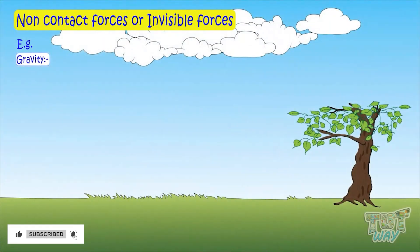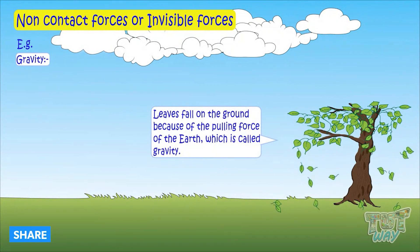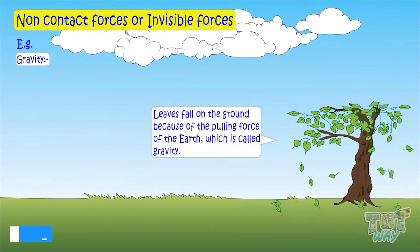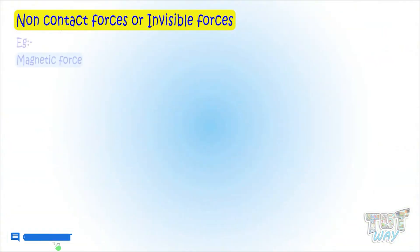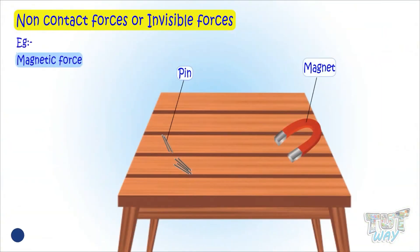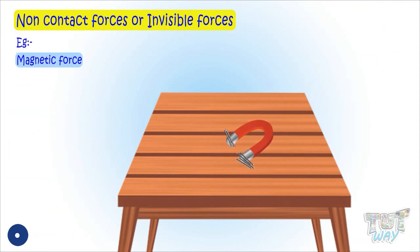Leaves fall from the tree to the ground — why? Because there is a pull from the earth. Another example of non-contact forces is magnetic force. Here is a pin. Bringing a magnet closer to it, the magnet attracts the pin.